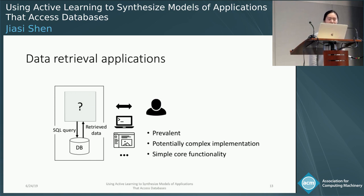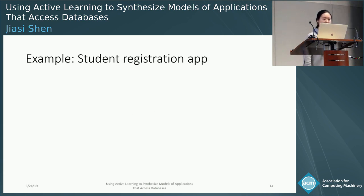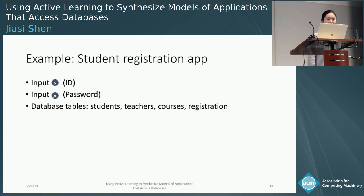For many of these apps, they contain multiple commands that each access different parts of the database. And in this research, we infer each of the commands one at a time. Here's an example program. It has a command that retrieves student registration records. It has two input parameters, S and P, which represent ID and password. It uses four database tables: student, teachers, courses, and registration.